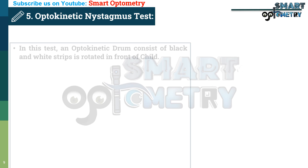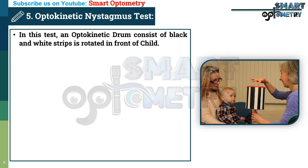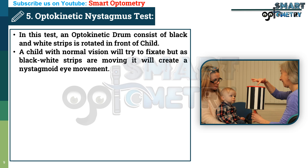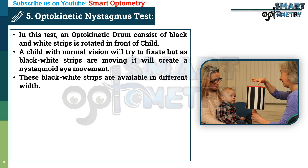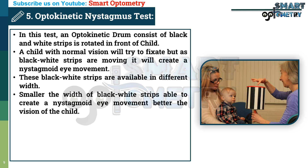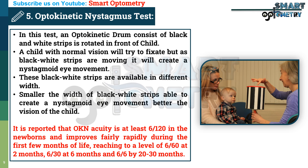Optokinetic nystagmus test: In this test, an optokinetic drum consisting of black and white strips is rotated in front of the child. A child with normal vision will try to fix on it, but as the black and white strips are moving, it will create a nystagmus eye movement. These black and white strips are available in different widths. The smaller the width of the black and white strips able to create a nystagmus eye movement, the better the vision of the child. It is reported that optokinetic nystagmus acuity is at least 6 by 120 in newborns and improves rapidly during the first few months of life, reaching a level of 6 by 60 at 2 months, 6 by 30 at 6 months, and 6 by 20 to 30 months.